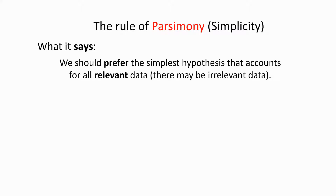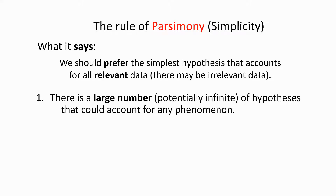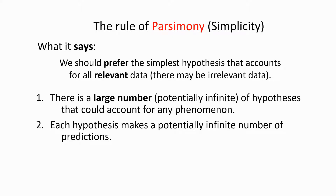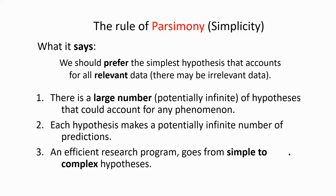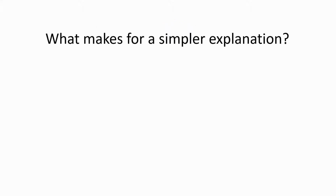Let's look at the rule of parsimony or simplicity. What the rule says in the modern interpretation is that we should prefer the simplest hypothesis that accounts for all of the relevant data. The reason for parsimony is that there is a large number — potentially an infinite number — of hypotheses that could account for any phenomenon. Moreover, each hypothesis makes a potentially infinite number of predictions. An efficient research program therefore goes from simple to complex hypotheses to make sense out of the vast possibilities. Because the rule of parsimony has broader implications, I want to spend a little more time on it than the other characteristics.